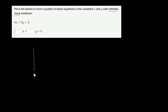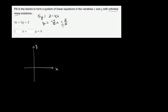We can graphically imagine that. Let's say that's our y-axis and this is our x-axis. If we were to put this into slope-intercept form, you would have 5y is equal to 2 minus 4x. Dividing both sides by 5, you get y equals negative 4/5 x plus 2/5. This line has a y-intercept at 2/5 and a negative 4/5 slope — it looks something like that.